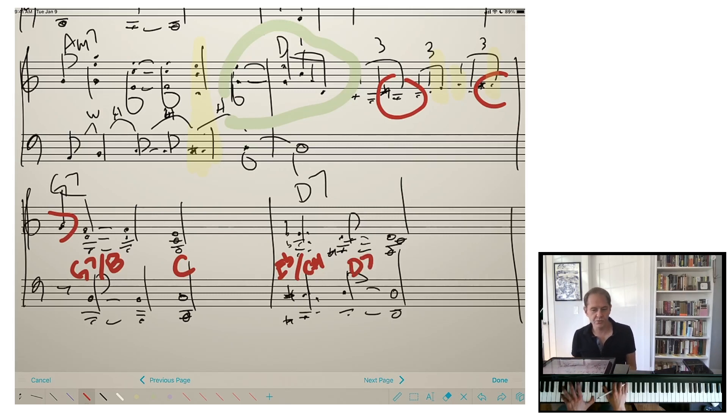We see this kind of thing in rhythm changes, too. You can see it's two chromatic lines. One going down, one going up. Right?